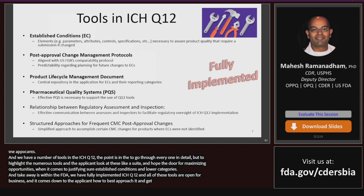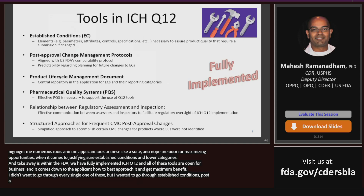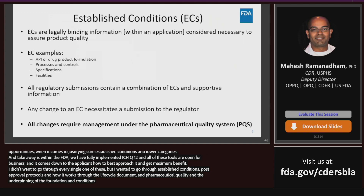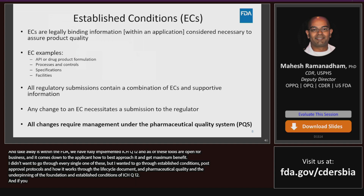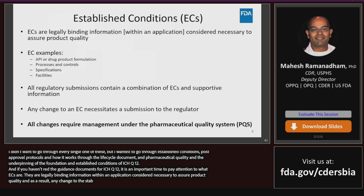I want to bring particular attention to established conditions, PACMPs — or as we call them in the United States, Comparability Protocols — how it all works together in the Product Lifecycle Management document, and the Pharmaceutical Quality System as the underpinning foundation of efficient Q12 implementation. ECs are legally binding information within the application considered necessary to assure product quality. As a result, in the context of ICH Q12, any change to an established condition would require reporting to the regulator.